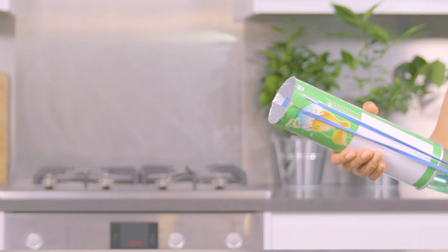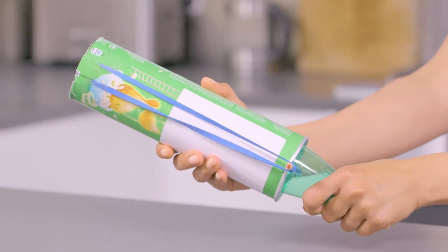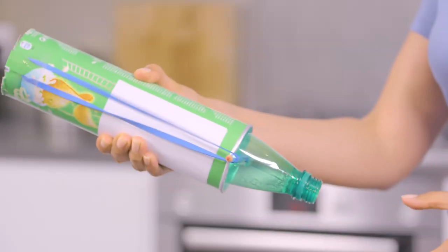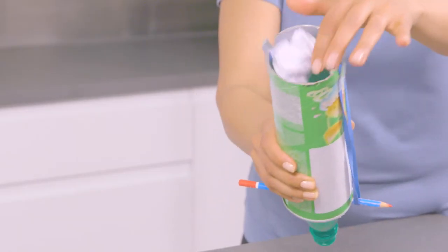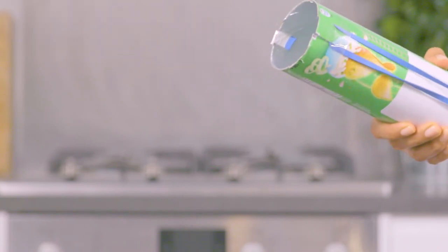By stretching the elastic bands, you're giving them potential energy. When you let go of the elastic bands, the energy gets transferred to the bottle, then to the paper ball, causing it to shoot out of the can.